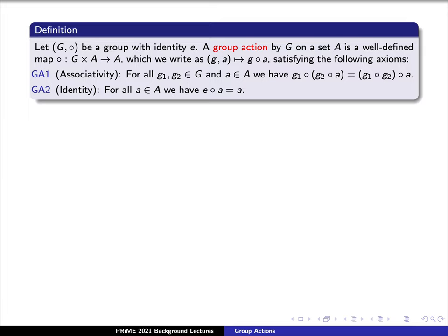Notice that g sub 2 circle a is an element in capital A, where here we're focusing on the action of capital G on capital A. The second, namely g sub 1 circle g sub 2, is just an element of the group capital G. Our second of two axioms, we call identity, states: for each element lowercase a in our set capital A, we have e circle a equals a. Recall here that e is the identity of our group capital G.